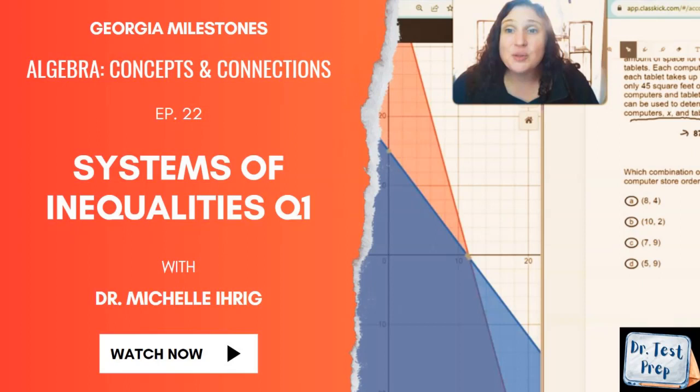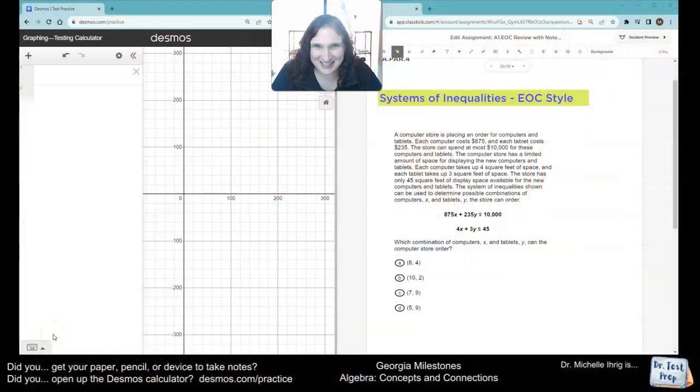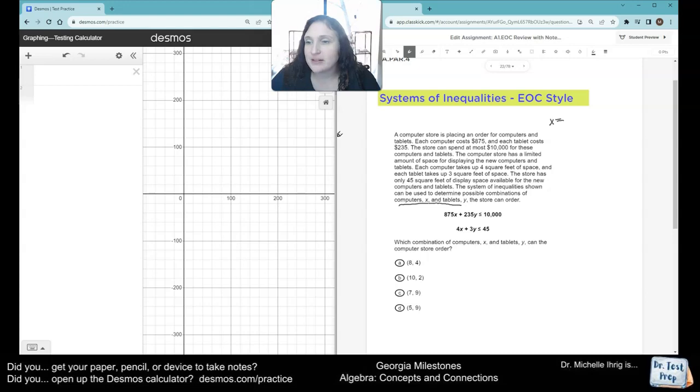All right, so this is an EOC style question. Welcome, I'm Dr. Ehrig. A computer store is placing an order for computers and tablets. Each computer costs $875 and each tablet costs $375. So we're just going to have X, it tells you as computers, Y as tablets.